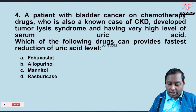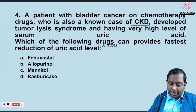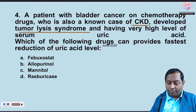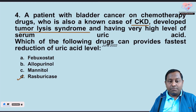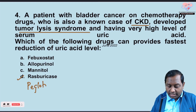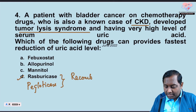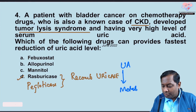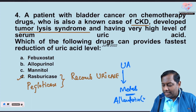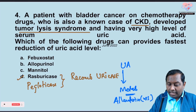Question four: a patient with bladder cancer on chemotherapy developed tumor lysis syndrome with very high uric acid levels. Which drug provides the fastest reduction in uric acid? The answer is rasburicase. Along with pegloticase, rasburicase belongs to the class of recombinant uricases, which cause breakdown and metabolism of uric acid into allantoin — a water-soluble metabolite that is easily excreted.